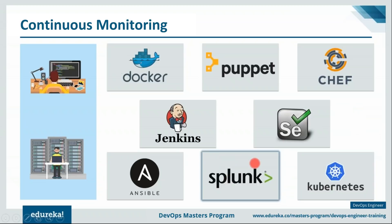To summarize: DevOps engineers are either developers or operations staff with additional skills like coding, cloud platforms such as Amazon Web Services, automated test and delivery tools, and logging and monitoring tools. Now it's time to understand what it takes to become a successful DevOps engineer.